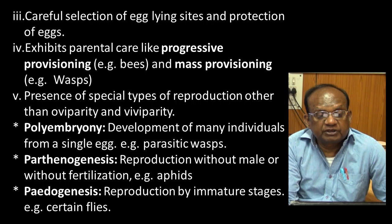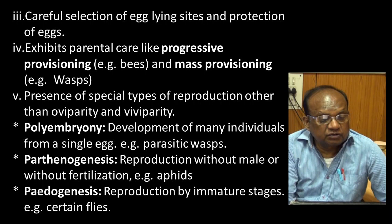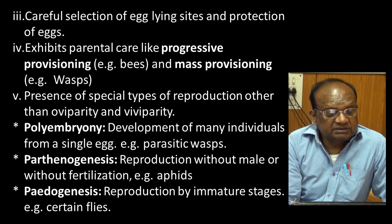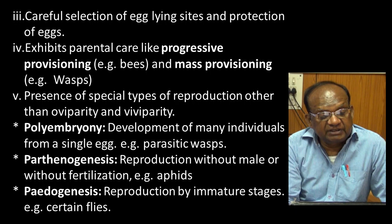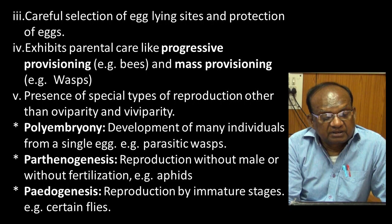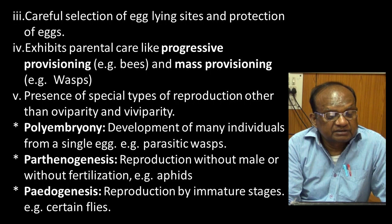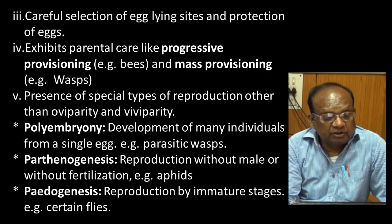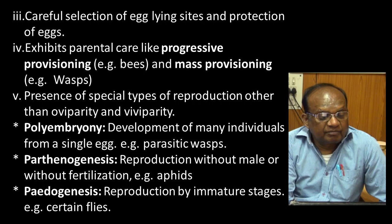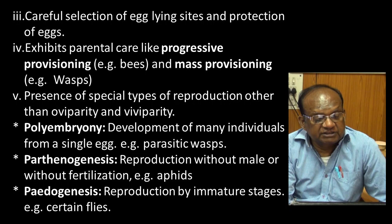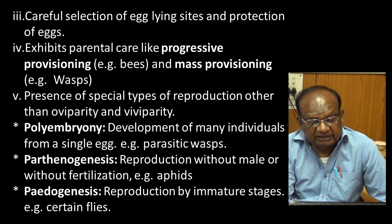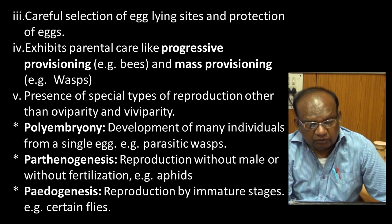Insects are very wise in selecting egg-laying sites and protecting eggs, exhibiting parental care like progressive provisioning (bees) and mass provisioning (wasps). Special types of reproduction also occur: polyembryony, where many individuals develop from a single egg (e.g., parasitic wasps); parthenogenesis, reproduction without fertilization; and paedogenesis, where immature larvae are capable of reproducing young ones, seen in certain flies.